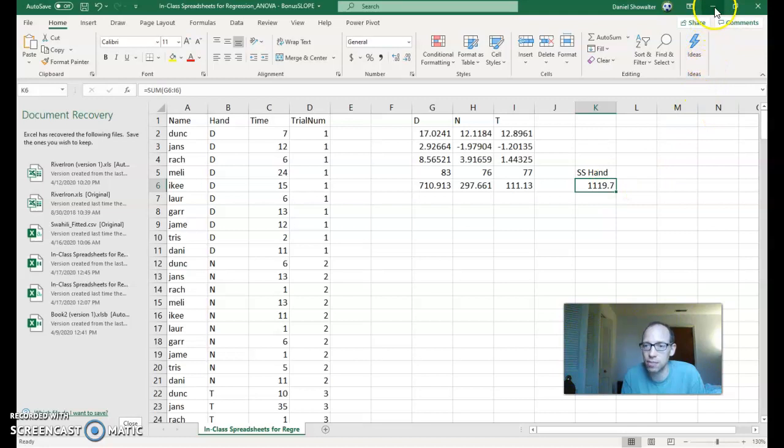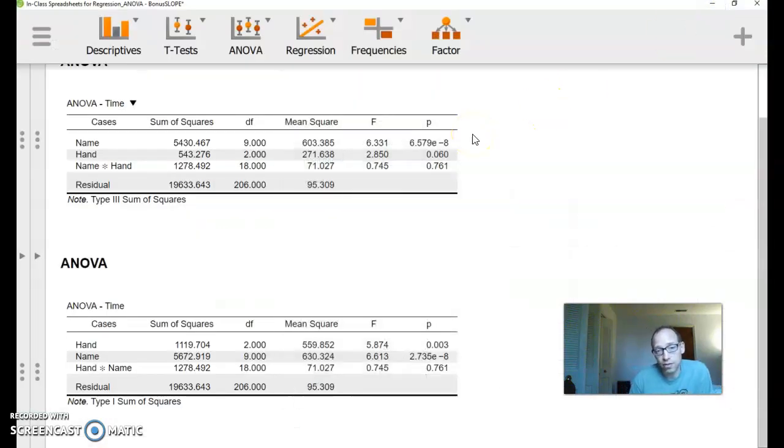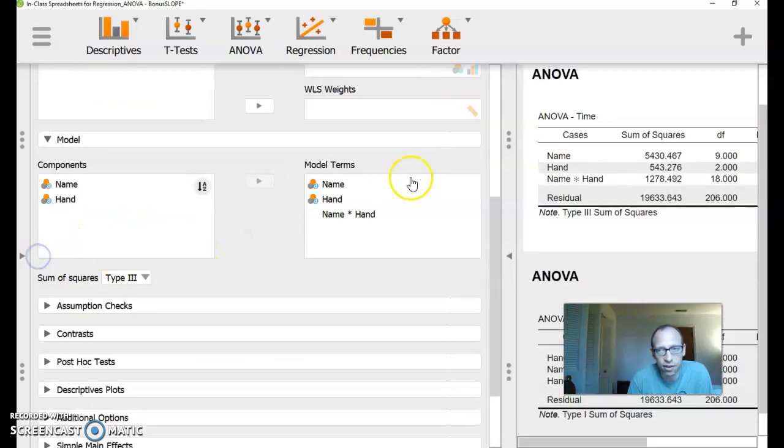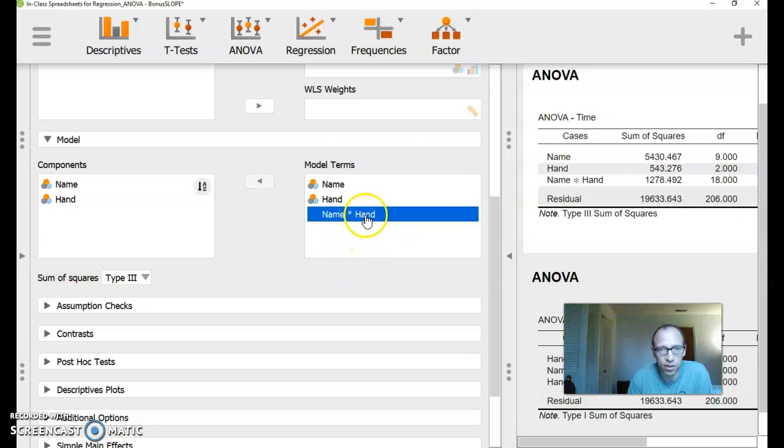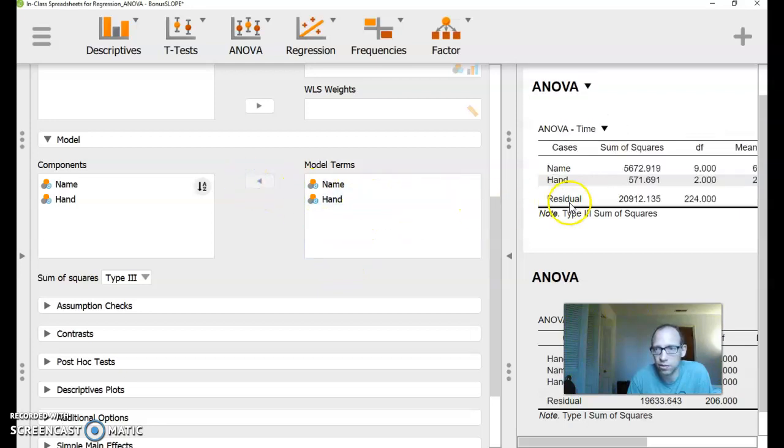Why was this hand sum of squares not equal to this? Again, we didn't have the interaction term, I think, in this one. So let me just take it out there real quick.